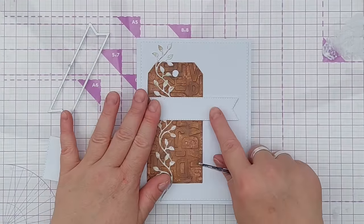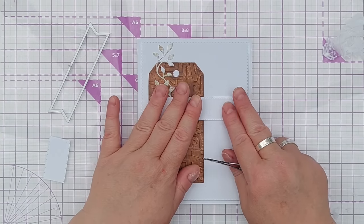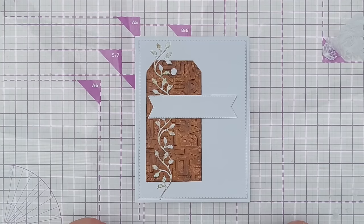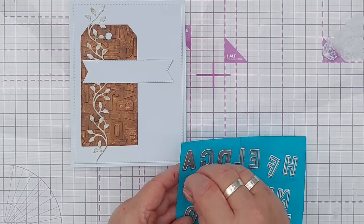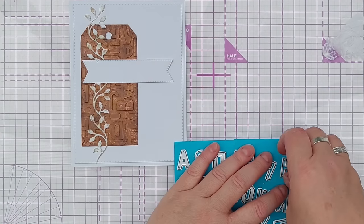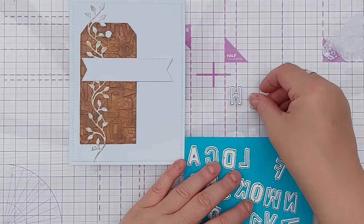So now that's stuck down there's about the same size gap here as there is here, so it's nice and central. I can get ready to make my sentiment. You can obviously put any sentiment you like on but I'm going to use the same letters that I used for the background here and I'm going to do the word 'hello' because it fits nicely on that banner.